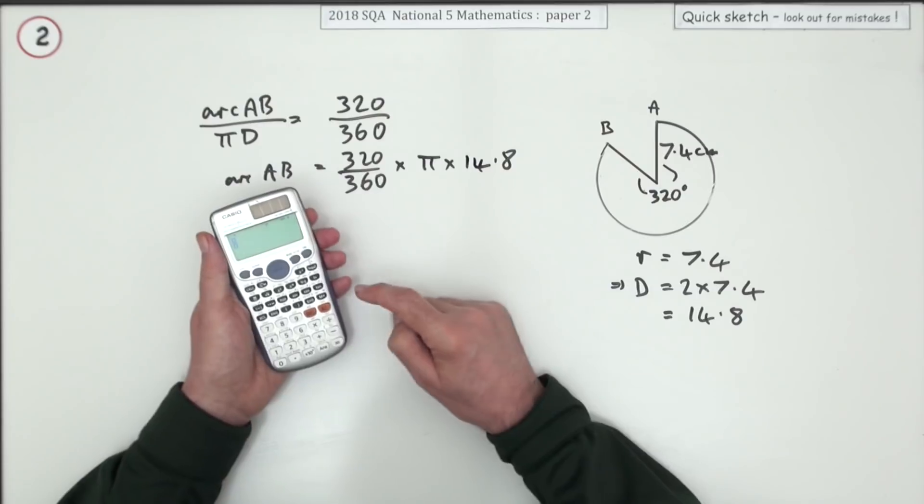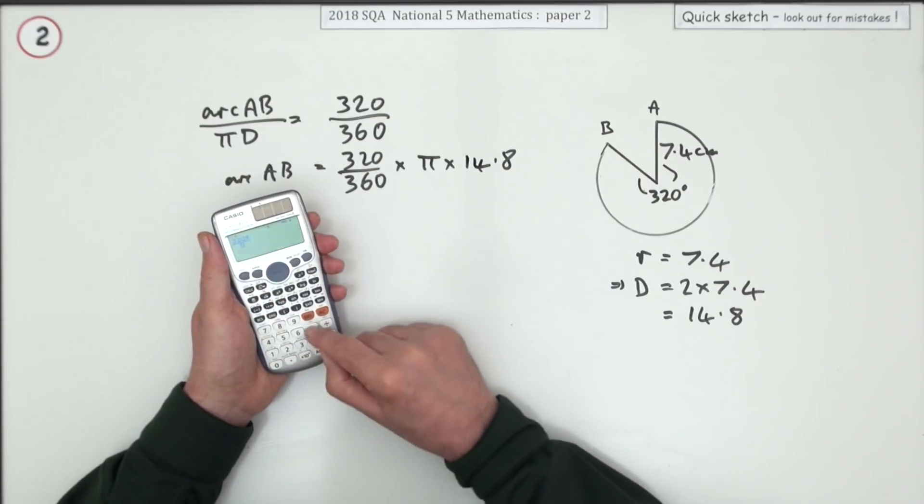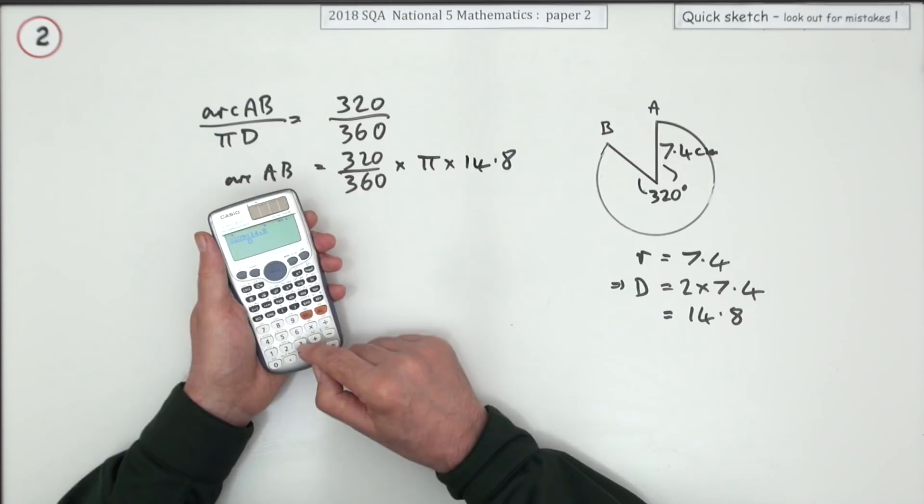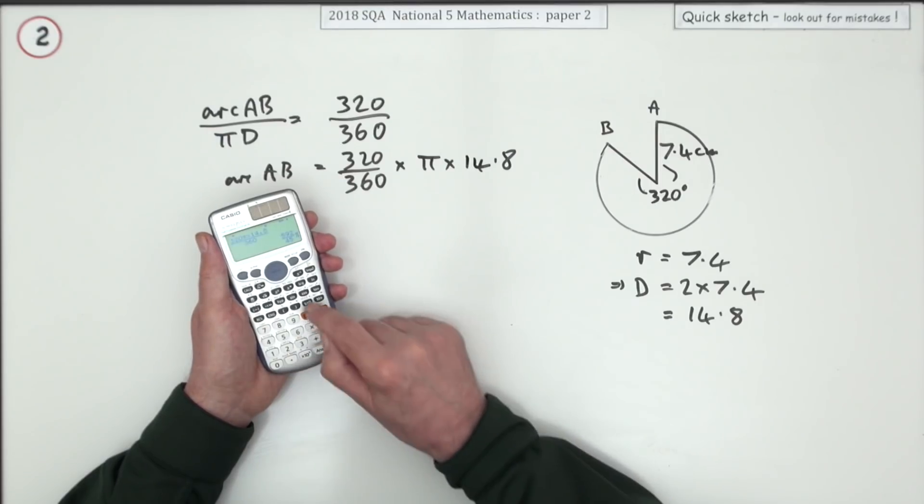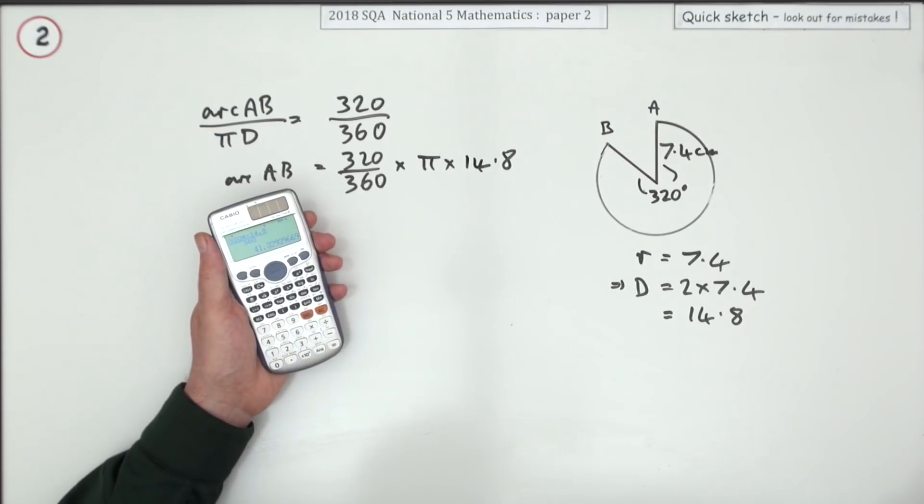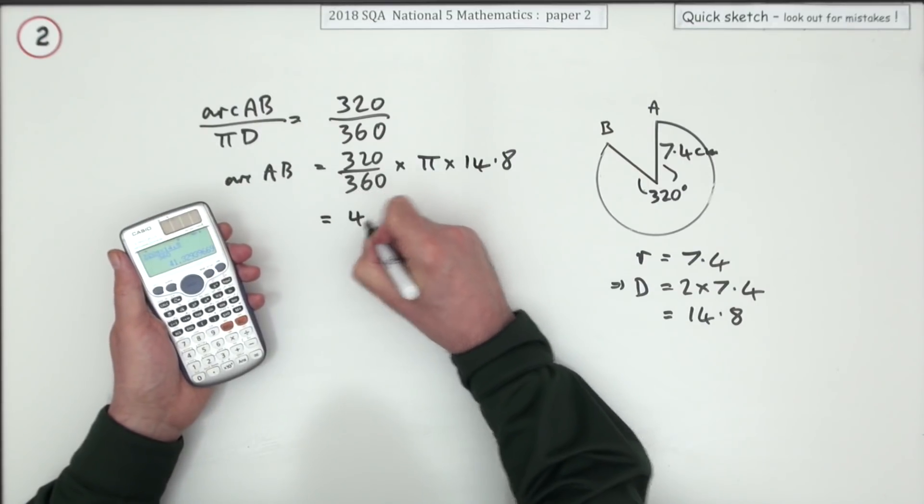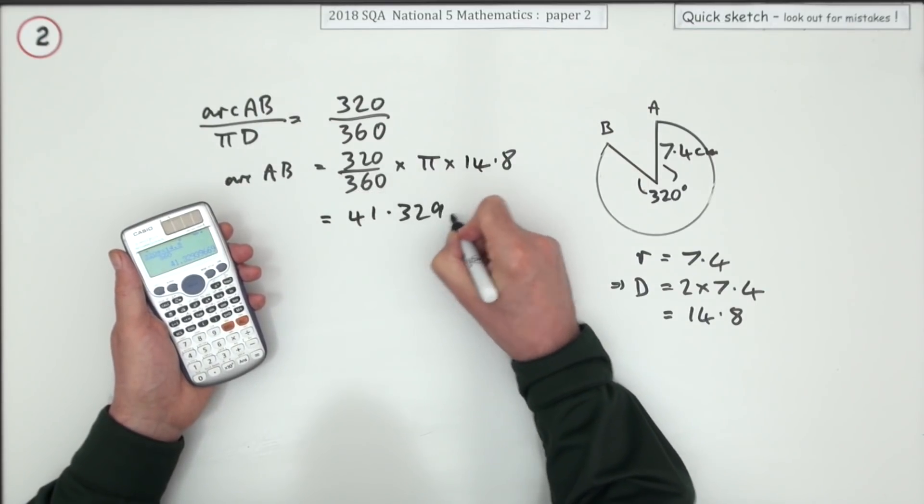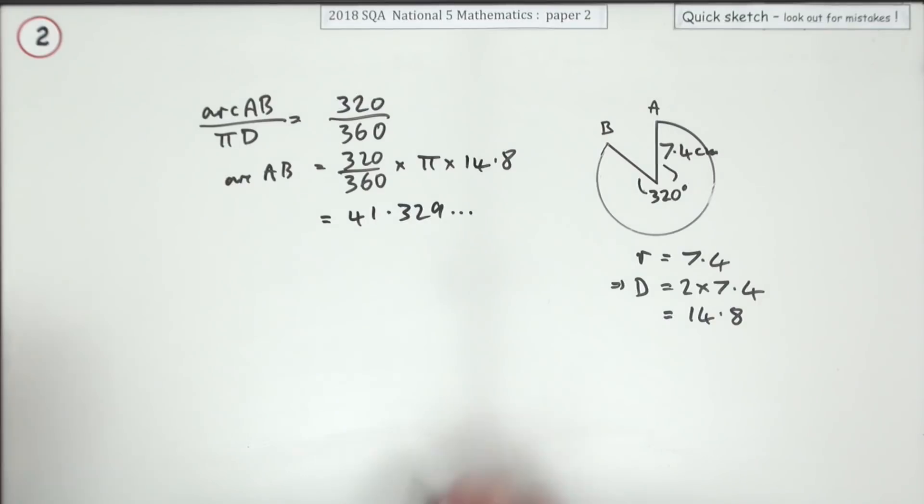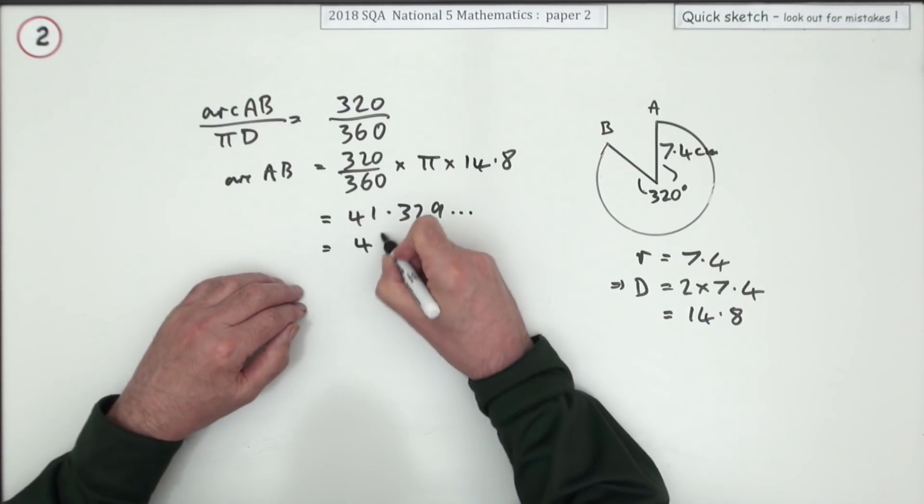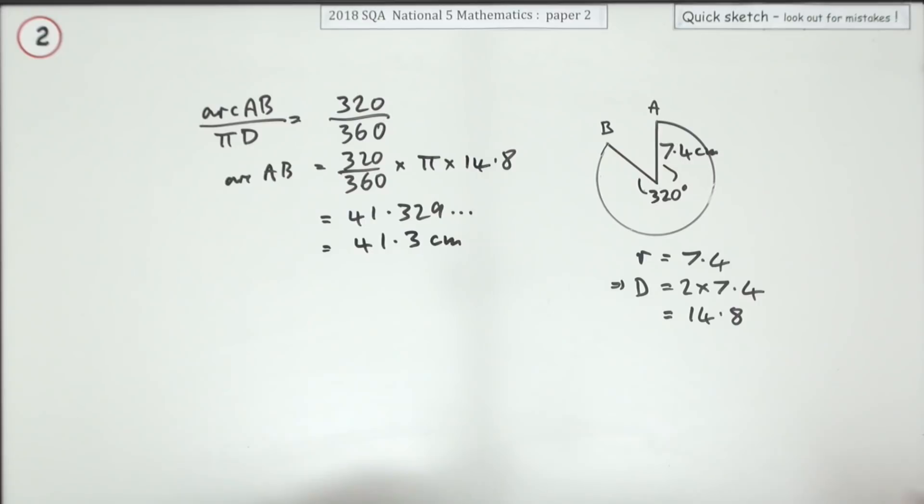Fraction button. Very handy. And you get 41.329 and so on which I'll round off to 41.3 centimeters.